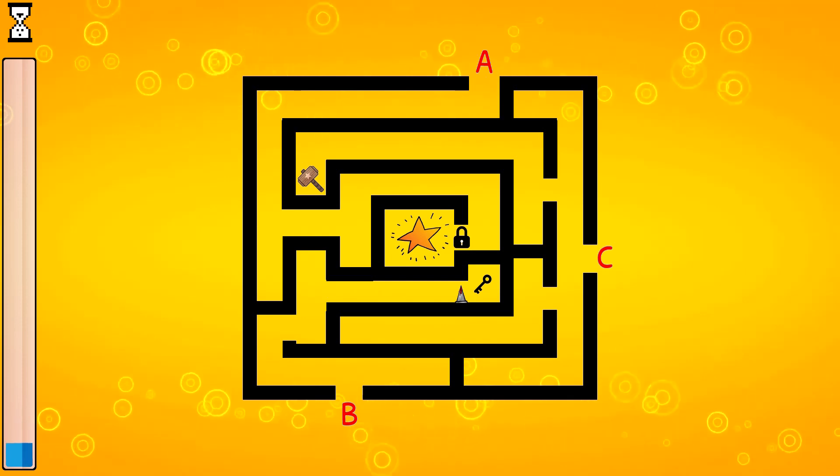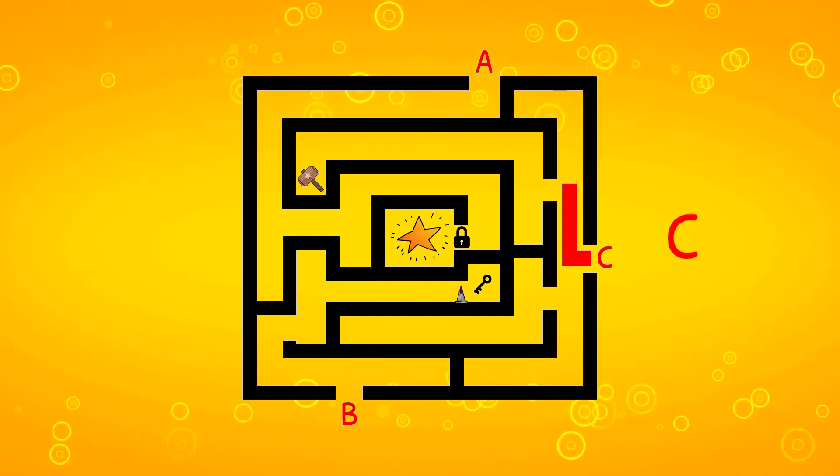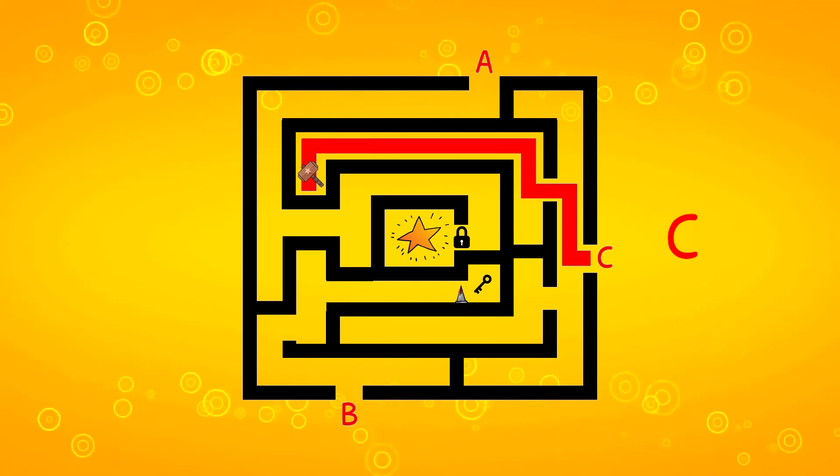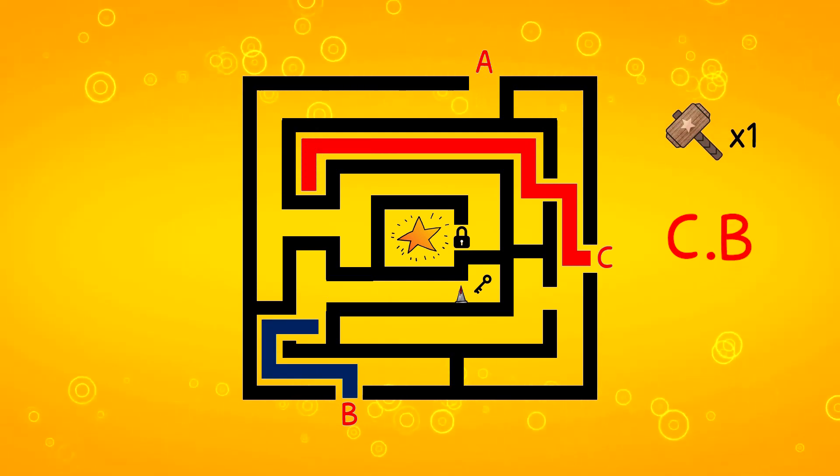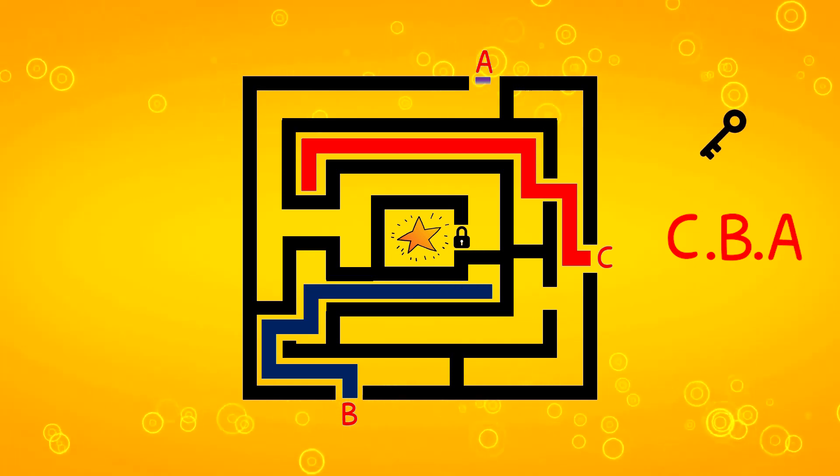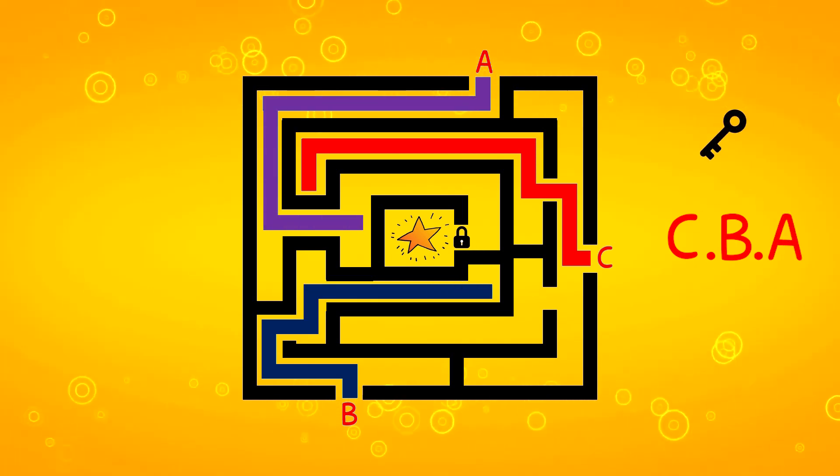First, we start by going through path C to reach the wooden hammer. Then, by destroying the thorn on path B, we reach the key. And finally, using the key, we unlock the lock on path A to reach the star.